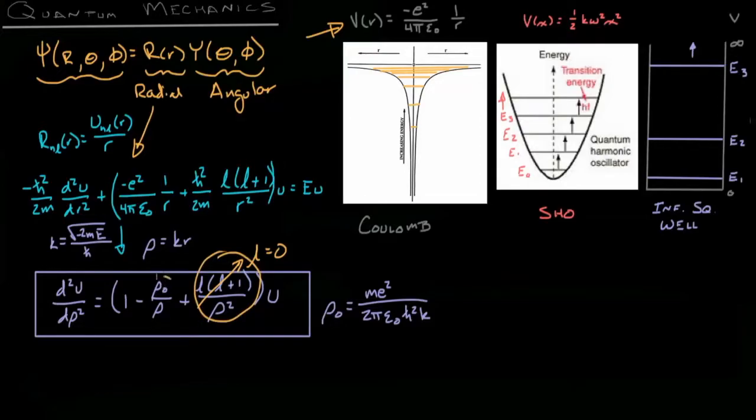Which means we're only left with a 1 minus some constant over rho. A second interesting idea is what happens if rho goes to 0?